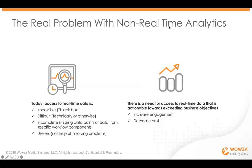Looking at analytics today in particular with live streaming: on one side you have an inability to get at the data — it's a black box. It's difficult through technical means or other methods to get at that data, and in a lot of cases it's incomplete — missing data points from specific workflow components. For example, there's heavy focus today on CDN and player data, but if you have a player problem, that doesn't necessarily mean the CDN or player is the problem — the issue could be further upstream towards the source.